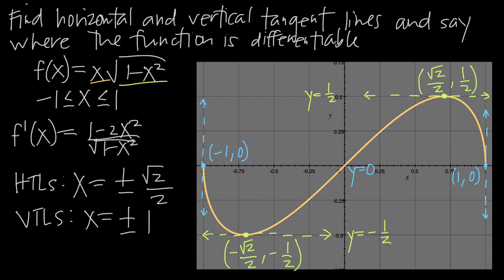When it comes to differentiability, a function is differentiable wherever it is continuous and defined. This function is continuous everywhere on the interval negative 1 to positive 1. However, a function is not differentiable where it has a vertical tangent line, so this function is differentiable everywhere on the interval except at x equals positive 1 and x equals negative 1, where the vertical tangent lines occur.